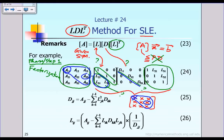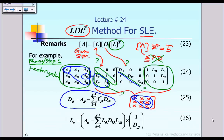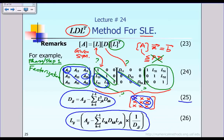For a matrix larger than 3 by 3 — such as 4 by 4, 10 by 10, or 100 by 100 — the idea is still the same. Mathematicians have developed a general formula: use equation 25 to calculate the diagonal matrix terms and equation 26 to calculate the lower triangular matrix L. These must be computed in a specific order, which will become clear in the next few slides.